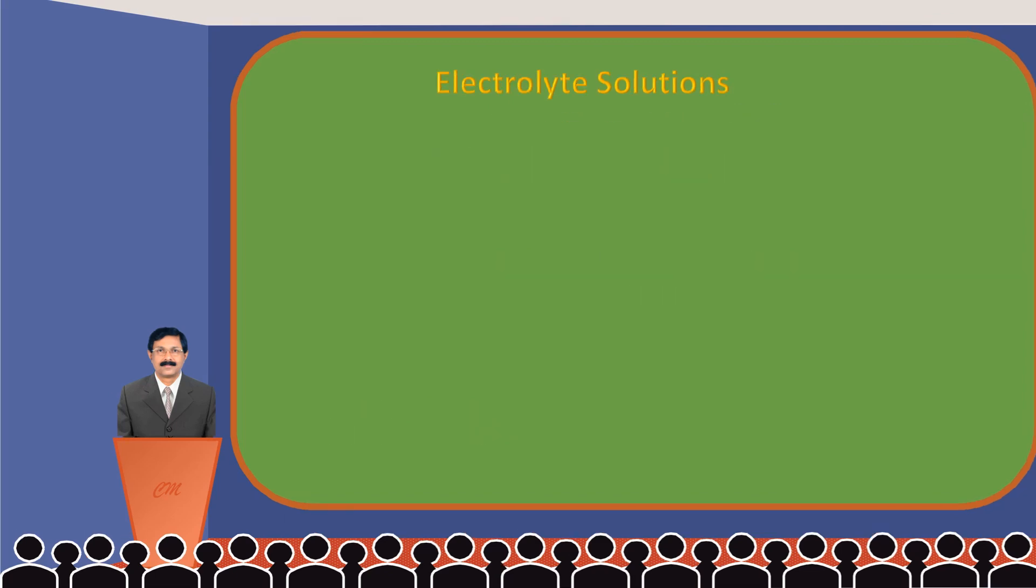You know that electrolytes are substances which produce ions in solution. Those substances which produce a large number of ions in solution are called strong electrolytes, for example potassium chloride in water. On the other hand, those substances which produce only a small number of ions in solution are called weak electrolytes.